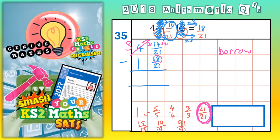14 add 21 is 35. So we're dealing with 35 21ths. So we're dealing with 3 and 35 21ths, take away 1 and 18 21ths.